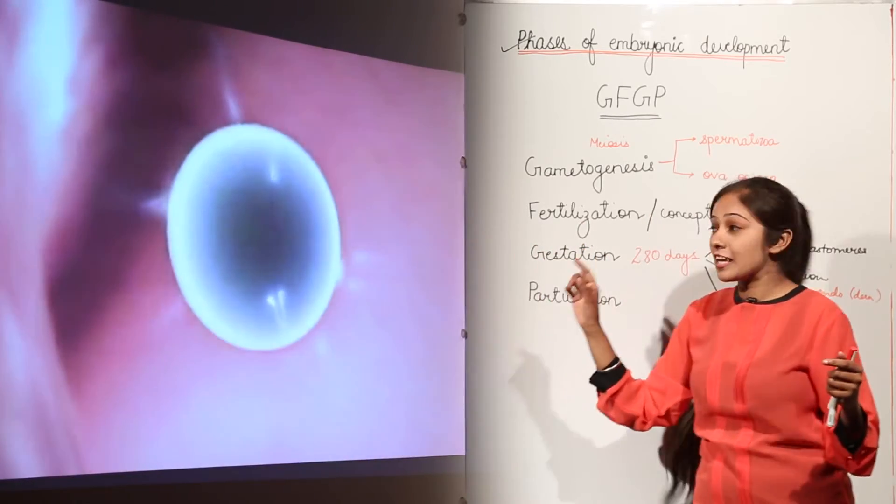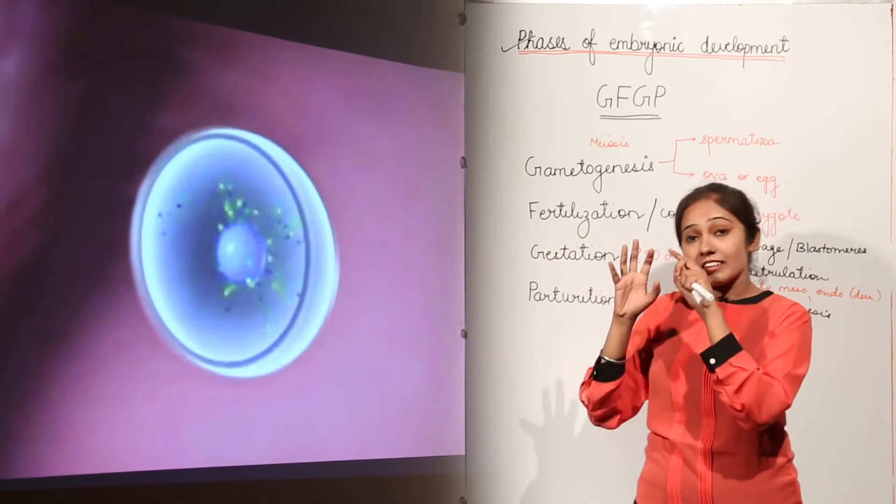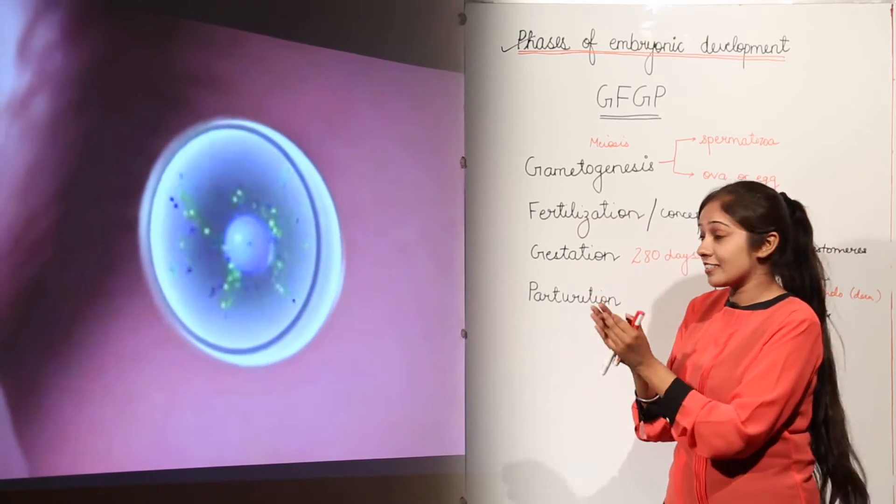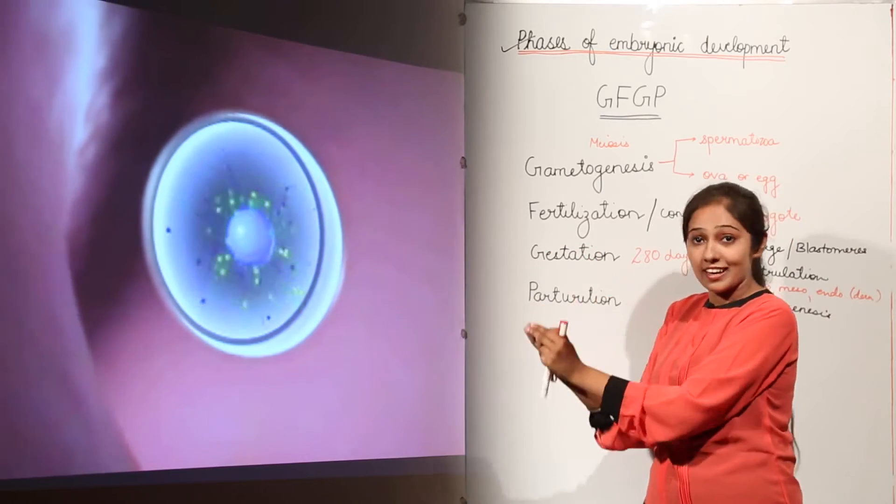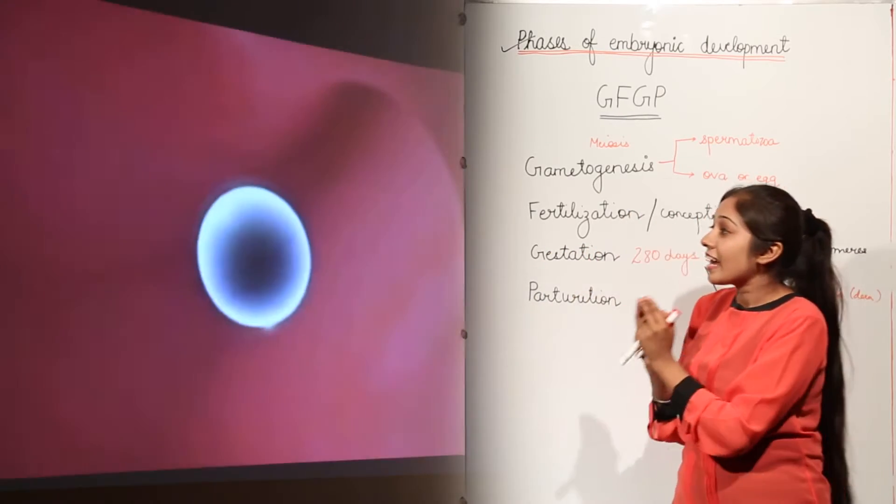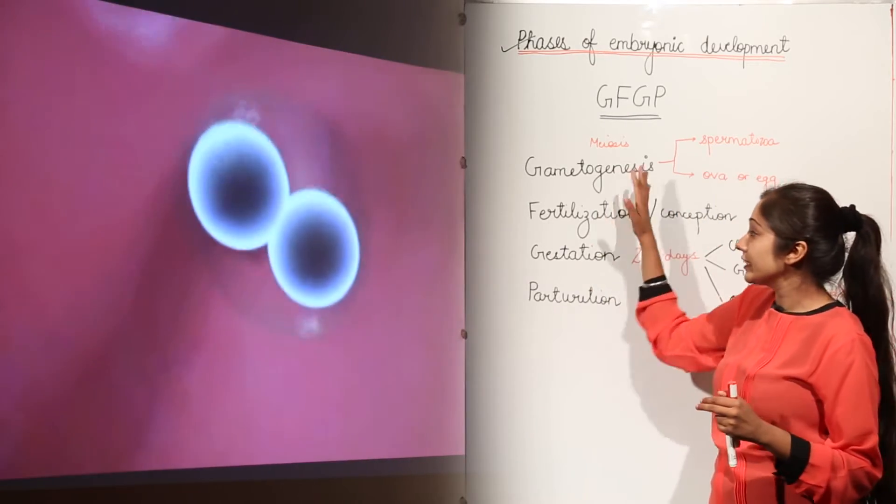Only one sperm is able to reach and penetrate, and then the nucleus which has genes, they are going to come together from male as well as from female. And after this, this first cell zygote is formed after the fusion of these gametes.